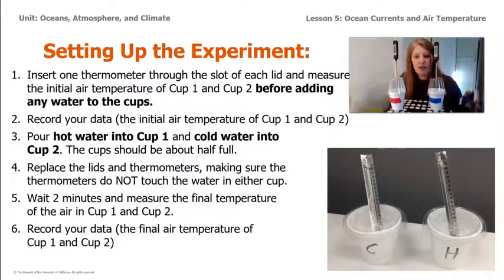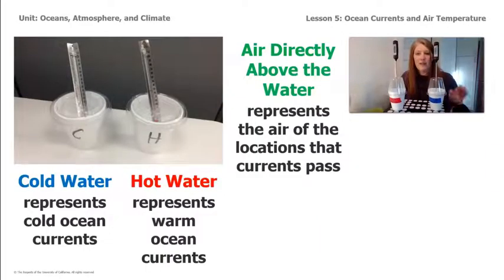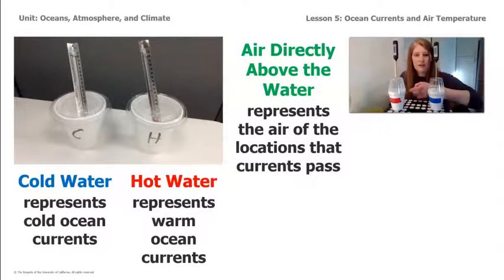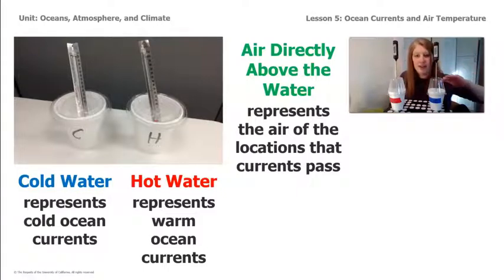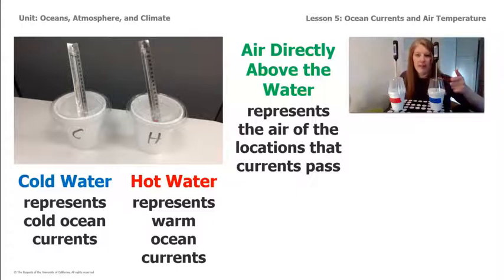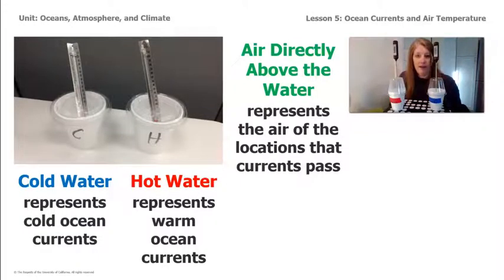Let's take a moment to talk about what the water represents. In our cold water cup, the cold water represents a cold ocean current, and the hot water in the other cup represents a warm ocean current. The air that's in the cup represents the air that is directly above where those ocean currents are going. The thermometer is not touching the water — we're not measuring the temperature of the ocean currents; we're measuring the temperature of the air. Both cups started at about 22 degrees Celsius, and after two minutes we will look at the results.